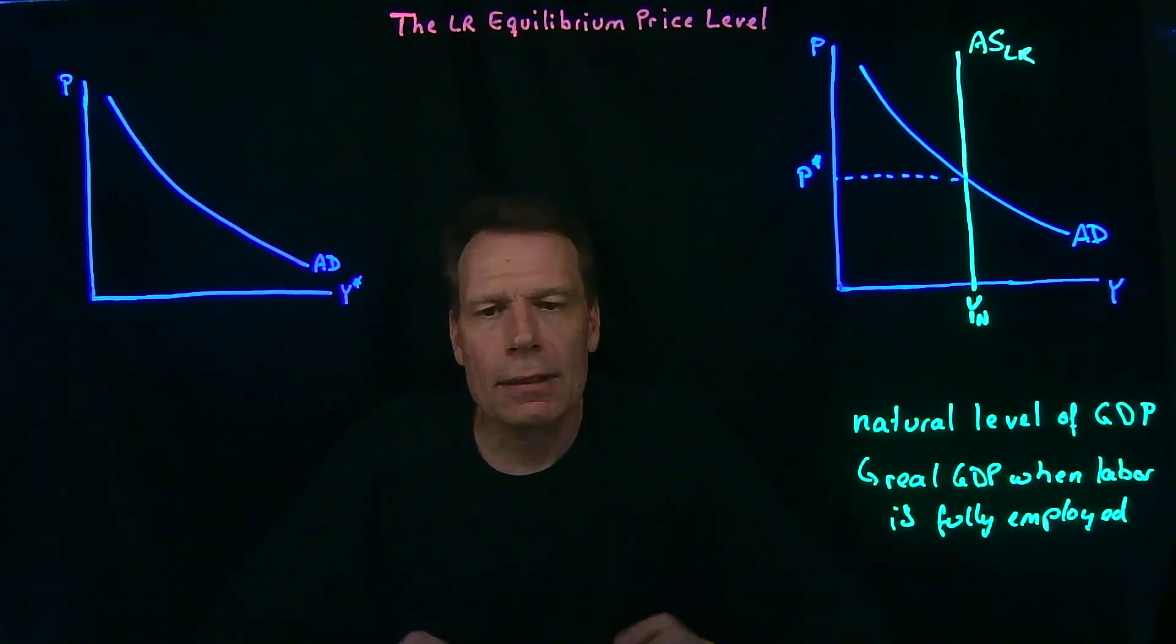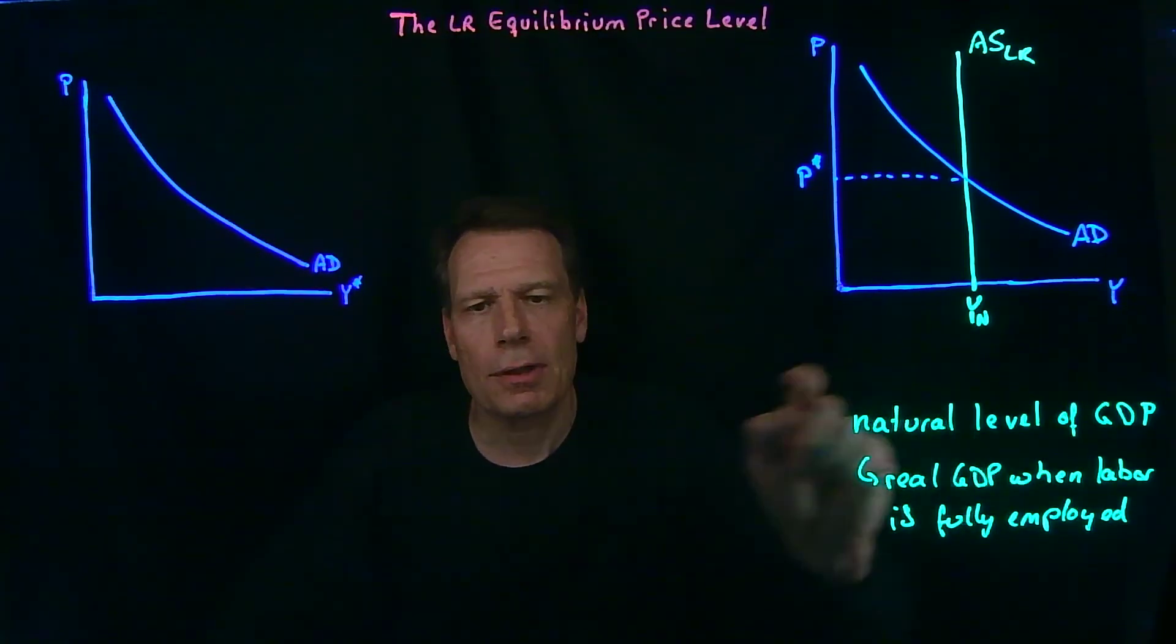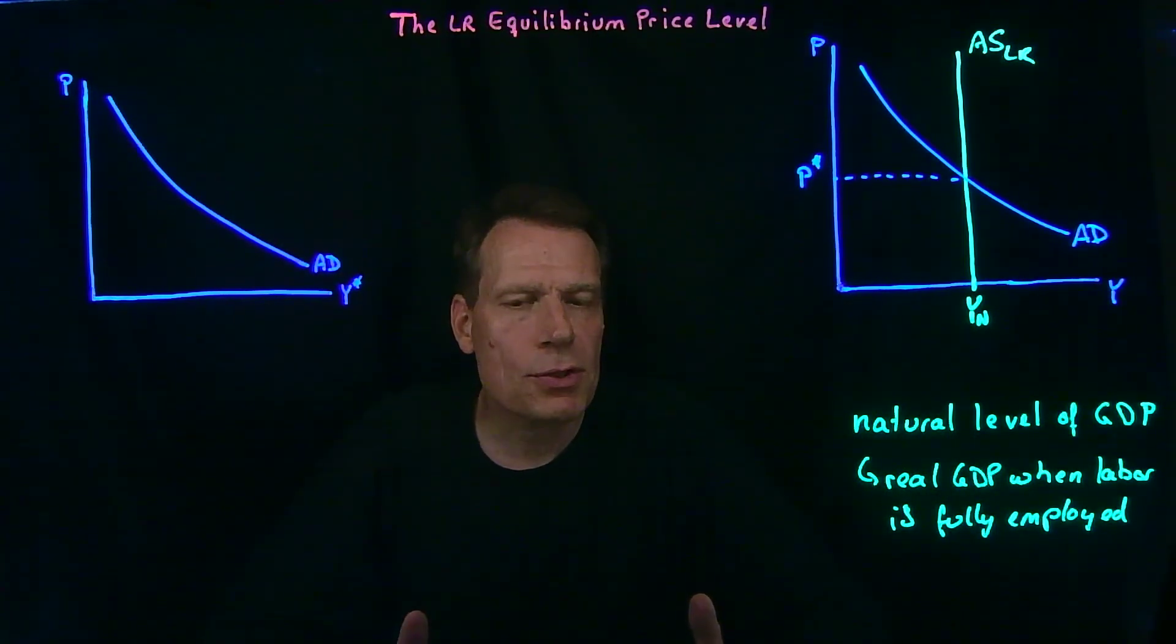In the meantime, you can think a little bit about what kinds of factors do you think determine the natural level of GDP. We've mentioned some of them. How do you think they affect natural level of GDP? And can you think of others?